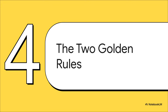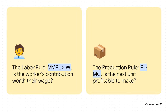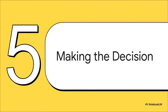Let's put these two incredibly powerful rules right next to each other and see what we've got. One rule focuses on the input — that's the labor. The other rule focuses on the output — that's the product. But here's the kicker: as we're about to see, they both point to the exact same decision.